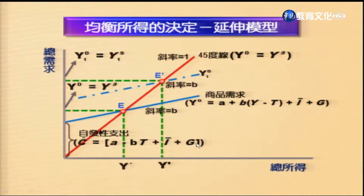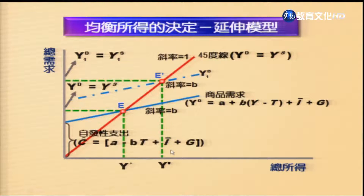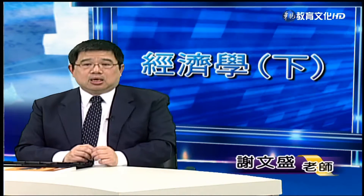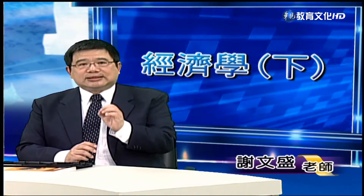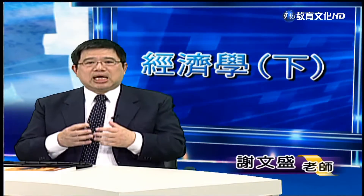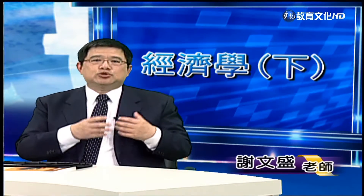若自發性支出增加（Ī增加、Ḡ增加、A增加，或 T̄減少），有效需求線往上移，從 YD 移至 YD'，均衡所得從 Y* 增加至 Y**。這就是延伸模型下自發性支出增加使均衡所得增加的情形。接下來討論政府如何透過支出與租稅政策影響產出。